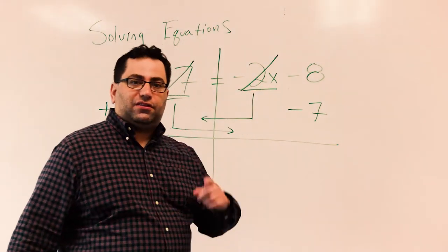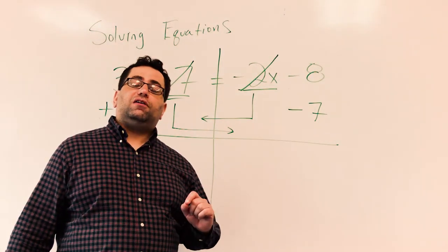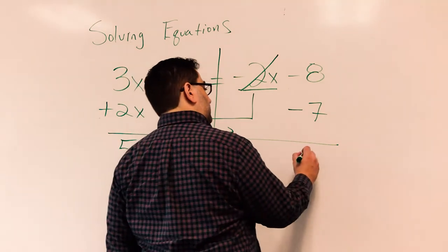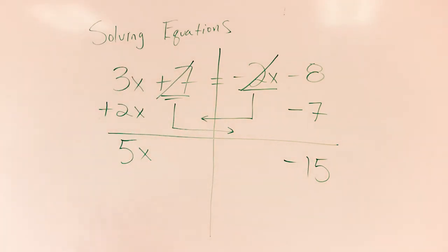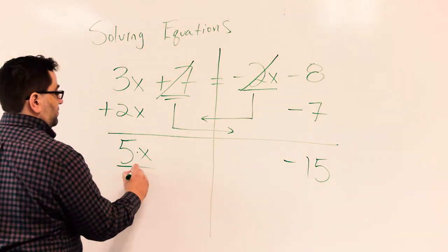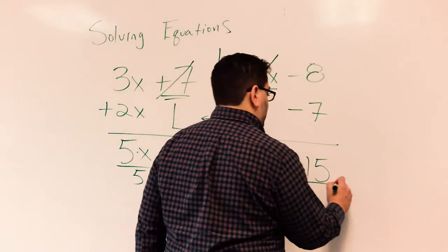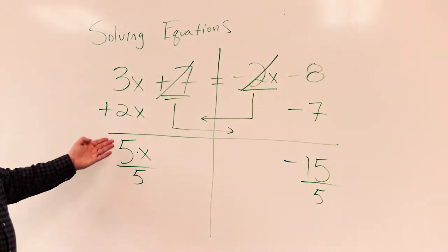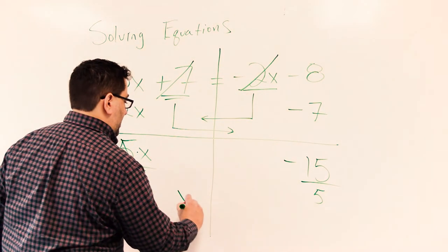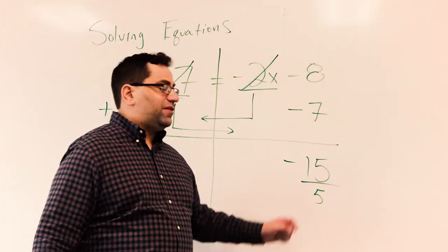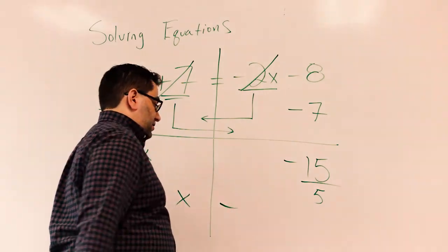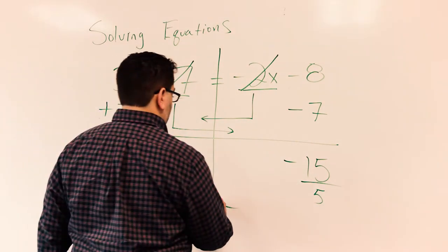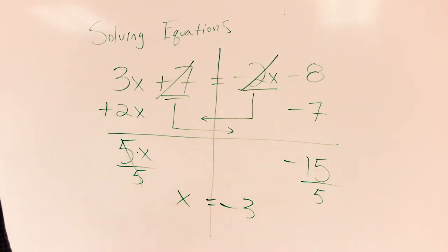3x plus 2x is 5x. Negative 8 and negative 7 — think back to that first video: two negatives, we add. 8 plus 7 is 15, and we keep the sign. Last step here — I reverse 5 times x with division. On the left side, 5 divided by 5 is 1, and I get x. And negative 15 divided by 5 — negative divided by positive is a negative, and 15 divided by 5 is 3. The answer is negative 3.